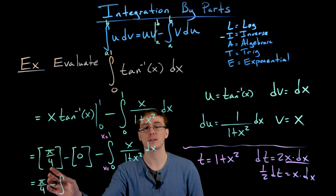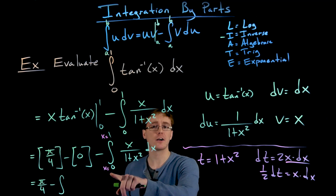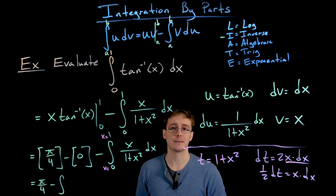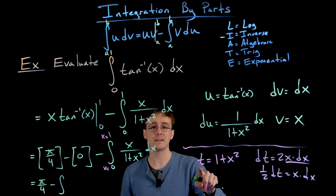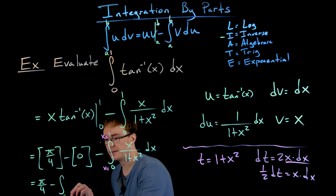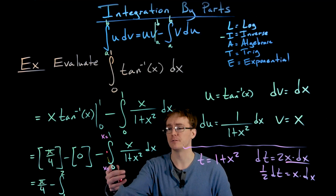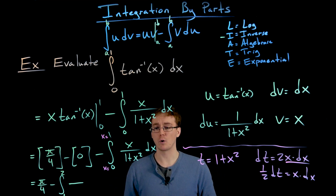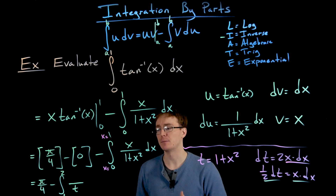Remember, pi over 4 is already taken care of — we can't forget it. We also need to change the limits of integration to t-values. Since t equals 1 plus x squared, when x equals 0, t equals 1, and when x equals 1, t equals 2. So our new limits are 1 to 2. The integrand becomes one over t times one-half dt.